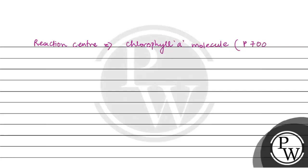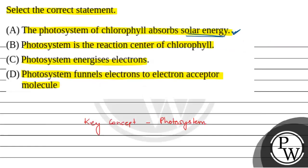Photosystem energizes electrons. Photosystem doesn't energize electrons. Solar energy energizes the electrons.